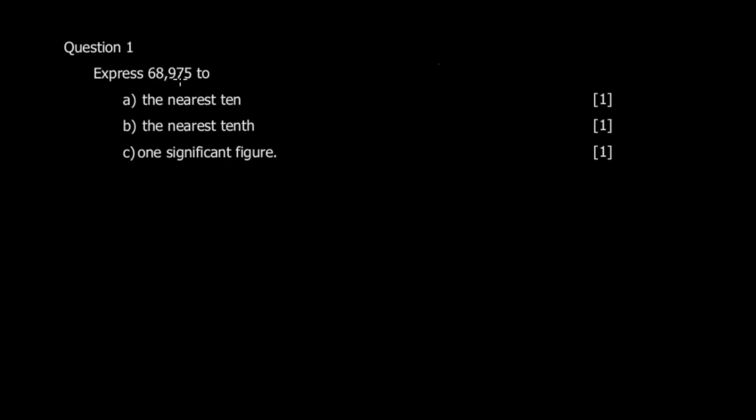To the nearest ten, you identify the digit that represents tens, so it's this one, and then you investigate how the next digit affects this, and you'd get 70.